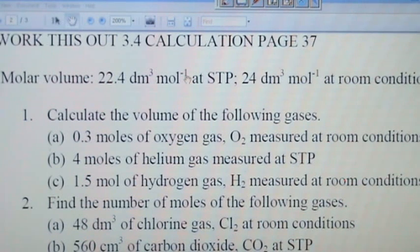Alright, now we want to work this out 3.4 and this has something to do with the molar volume. So at STP you have 22.4 dm³ and at room condition you have 24 dm³.